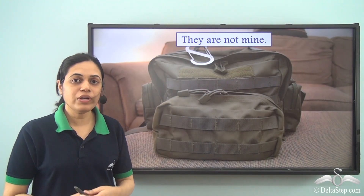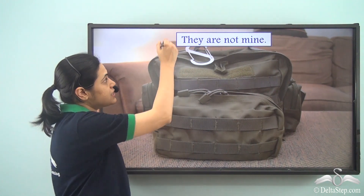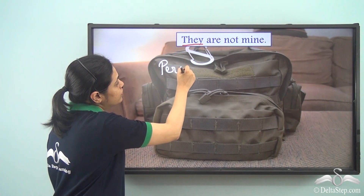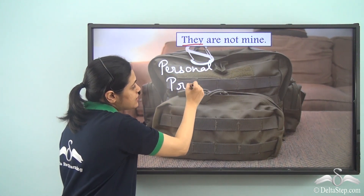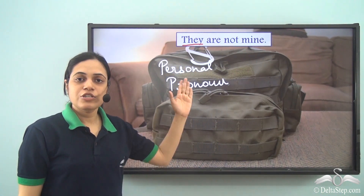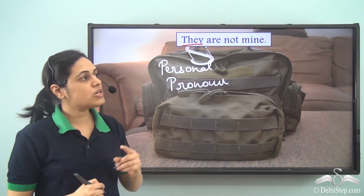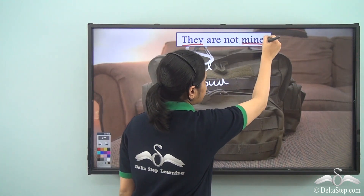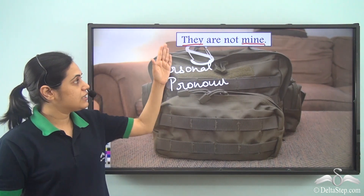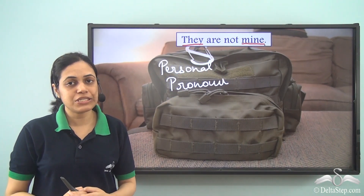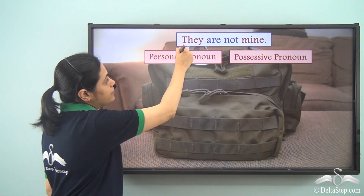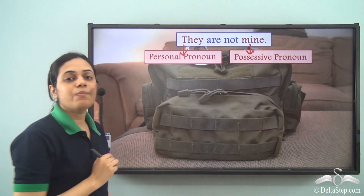'They are not mine.' What is the pronoun and what is its type? 'They' is a pronoun — it is used to refer to these bags, replacing the noun 'bags.' So 'they' is a personal pronoun. Now look at the word 'mine' — it is also a pronoun, replacing a noun and showing belonging or possession: the bags do not belong to me. So 'mine' is a possessive pronoun. This sentence has two pronouns: 'they' is a personal pronoun and 'mine' is a possessive pronoun.